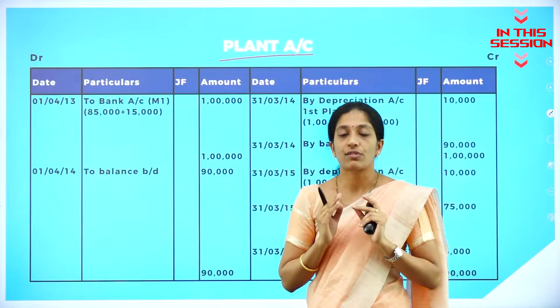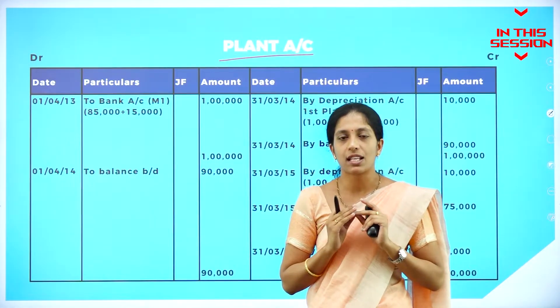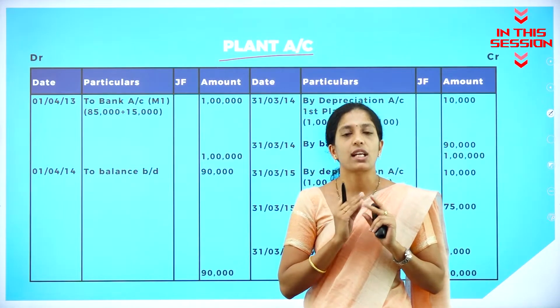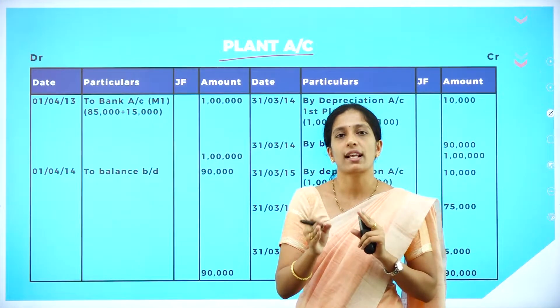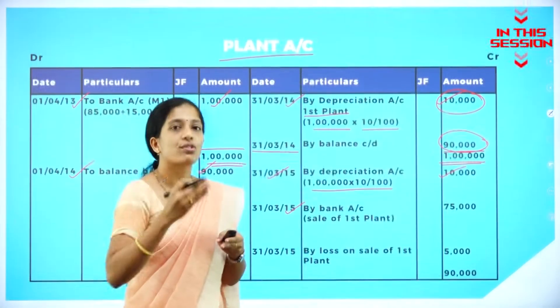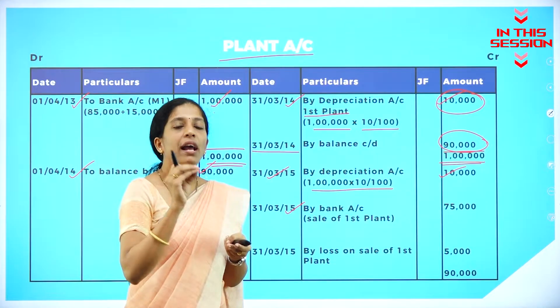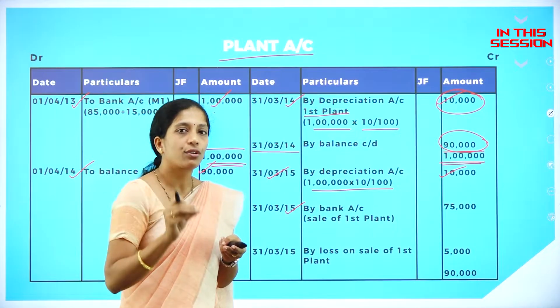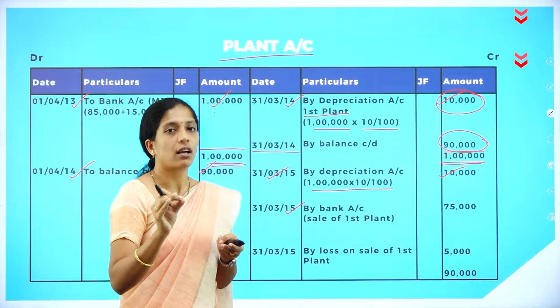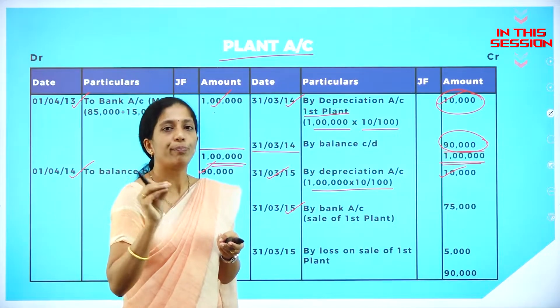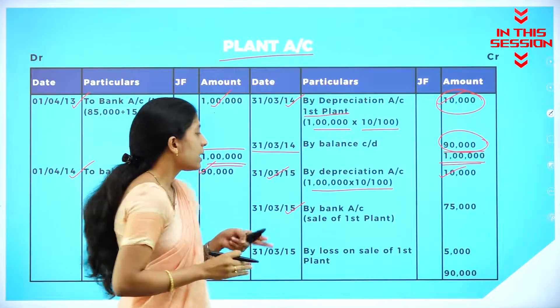The second entry is for charging depreciation. What is the entry? Depreciation account debit to asset account. When you sell the machine, what is the entry? Bank account debit to machine account or to plant account.